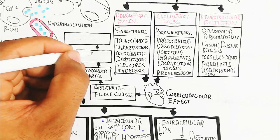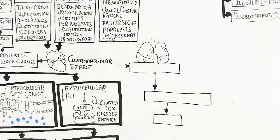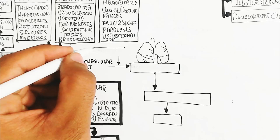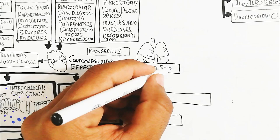Shock and multi-organ failure may lead to coma and death. Pulmonary edema occurs due to myocarditis — thickening of the myocardial muscles — leading to respiratory failure and death.